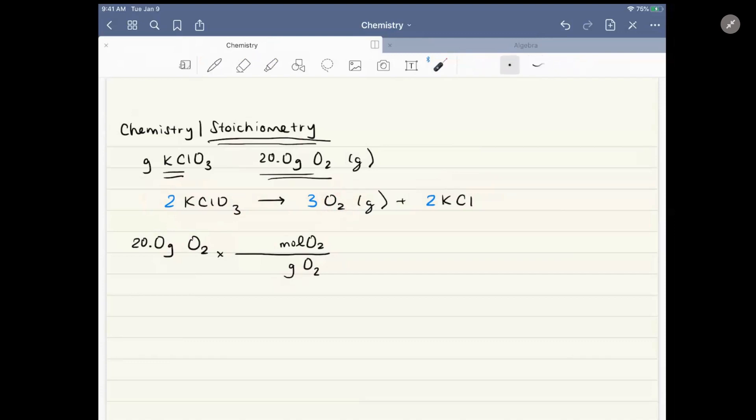So we want to cancel out grams of O2 here and here. So we write grams of O2 on the bottom and convert that to moles of O2. That's how we can change identities of atoms. So we have O2 here, KClO3. We can only change those in moles. So we go moles O2, moles of O2, we can convert that to moles of KClO3, and then moles of KClO3 to grams of KClO3.